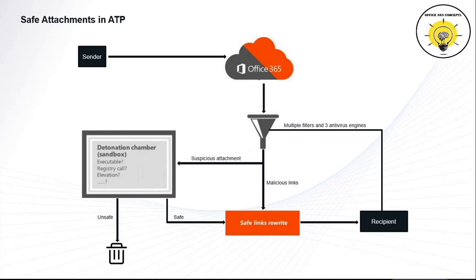As soon as an email reaches ATP, it is moved to a virtual environment where attachments are scanned. This virtual environment is called a detonation chamber or sandbox. Safe Attachments detonates attachments that are common targets for malicious contents, such as Office documents, PDF files, executable files, and flash files. If an attachment is found unsafe, that attachment is rejected. If the attachment is found safe, both the email and the attachment are delivered to the recipient's inbox.